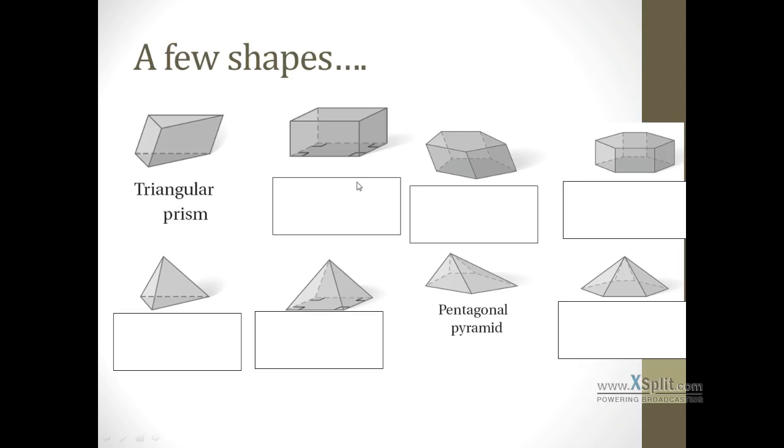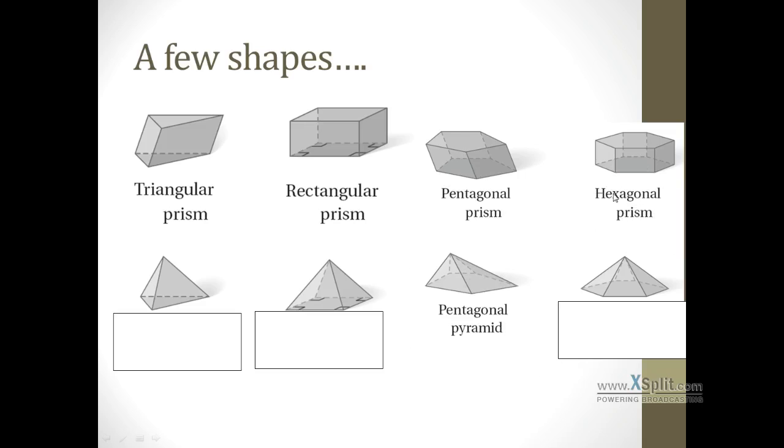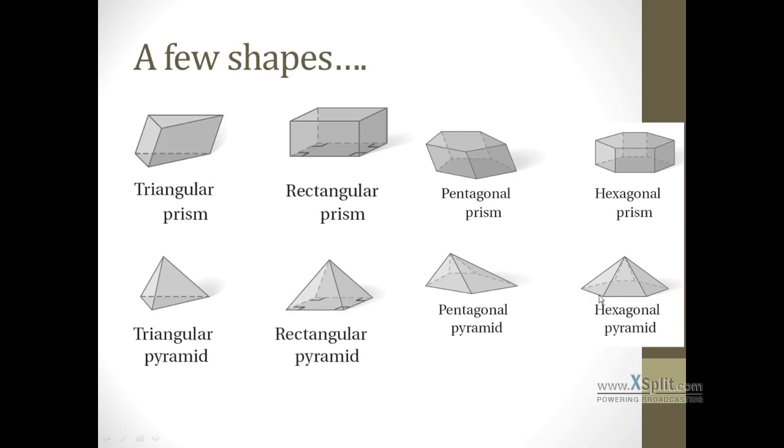We can name a few of these others. Next one up is going to be a rectangular prism because the base is a rectangle. It's a prism. We have a pentagonal prism because it's a pentagon on the bottom and it's a prism. Hexagonal prism. You also hear this pronounced hexagonal prism sometimes. On the bottom here we have a triangle base and it's a pyramid, so triangular pyramid. Rectangle base and it's a pyramid, so rectangular pyramid. And last one up we have a hexagon base and it's a pyramid, so hexagonal pyramid.